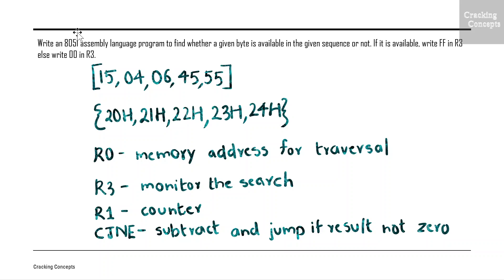The question is to write an 8051 assembly language program to find whether a given byte is available in the given sequence or not. If it is available, write double F in R3, else write double zero in R3.